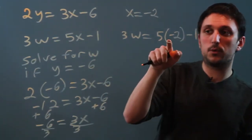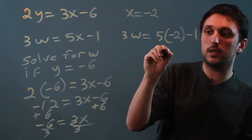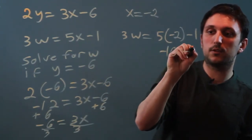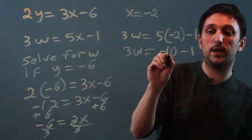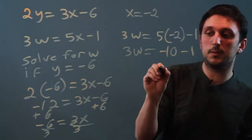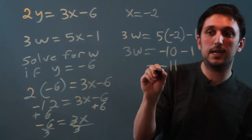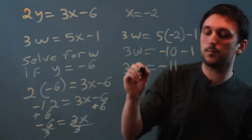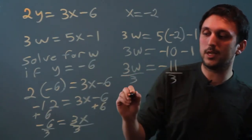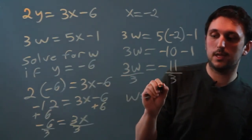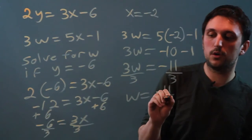So the first thing we do is the parentheses. 5 times negative 2 is negative 10, minus 1 equals 3w. So negative 10 minus 1 is going to be negative 11. That equals 3w, and we're going to divide by 3 on each side, and we get w equals negative 11 over 3.